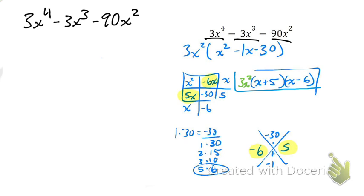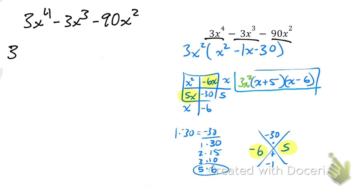I'm going to take out a common factor. What is the number I can divide all those numbers by? Three — yes. So I could take a 3 out. Now look at the variables: I have x to the fourth, x to the third, and x squared. What's the most x's I can take out of each of them? The biggest is 2, so I'm going to take out x squared from each of these.